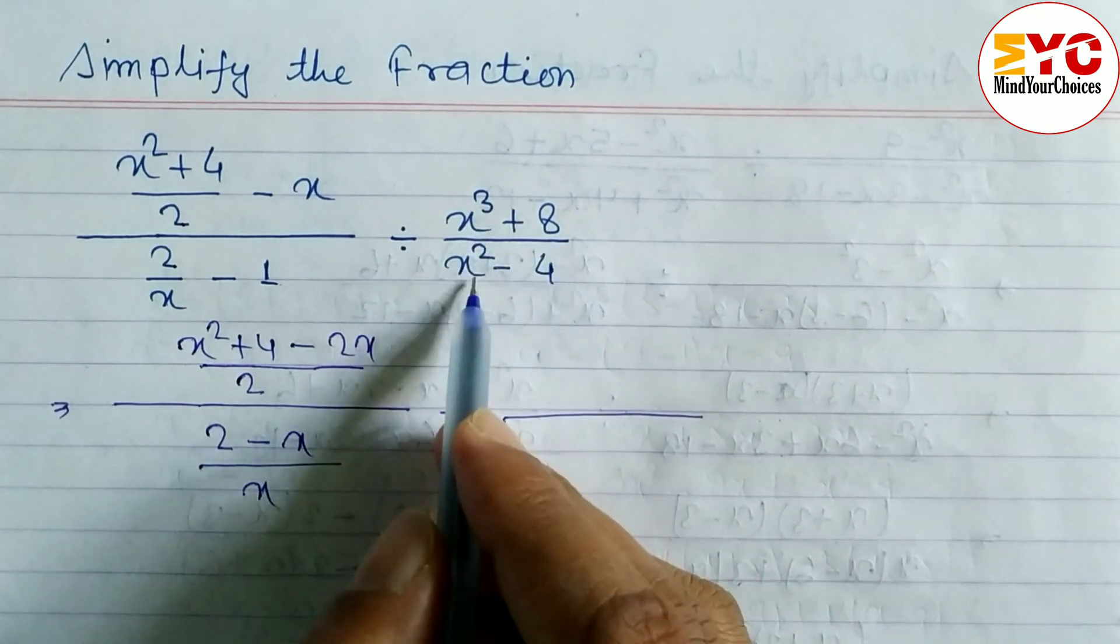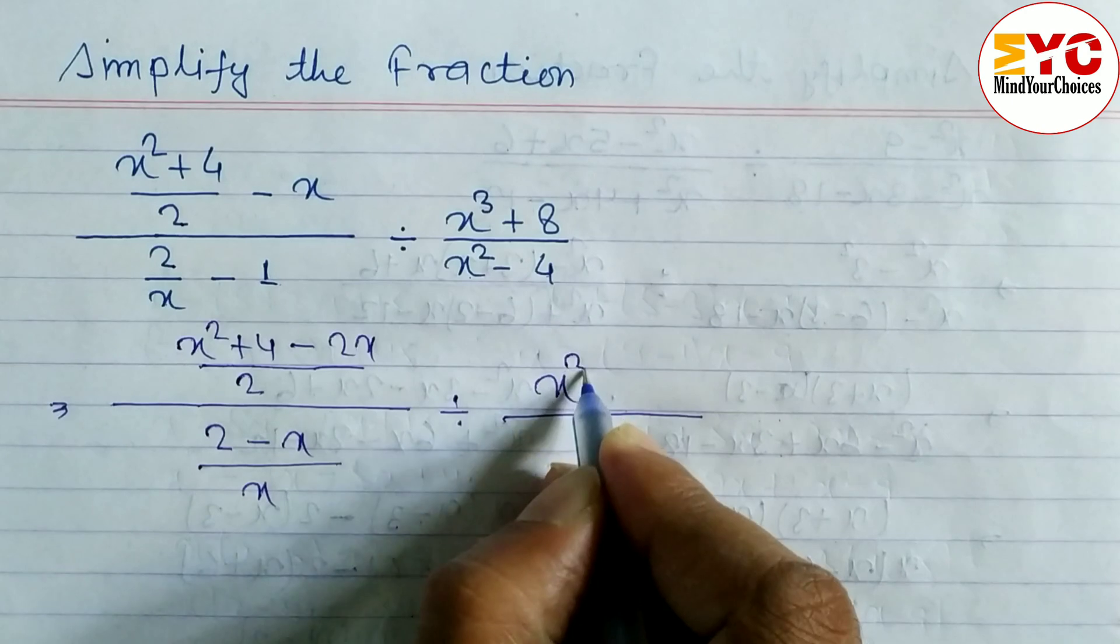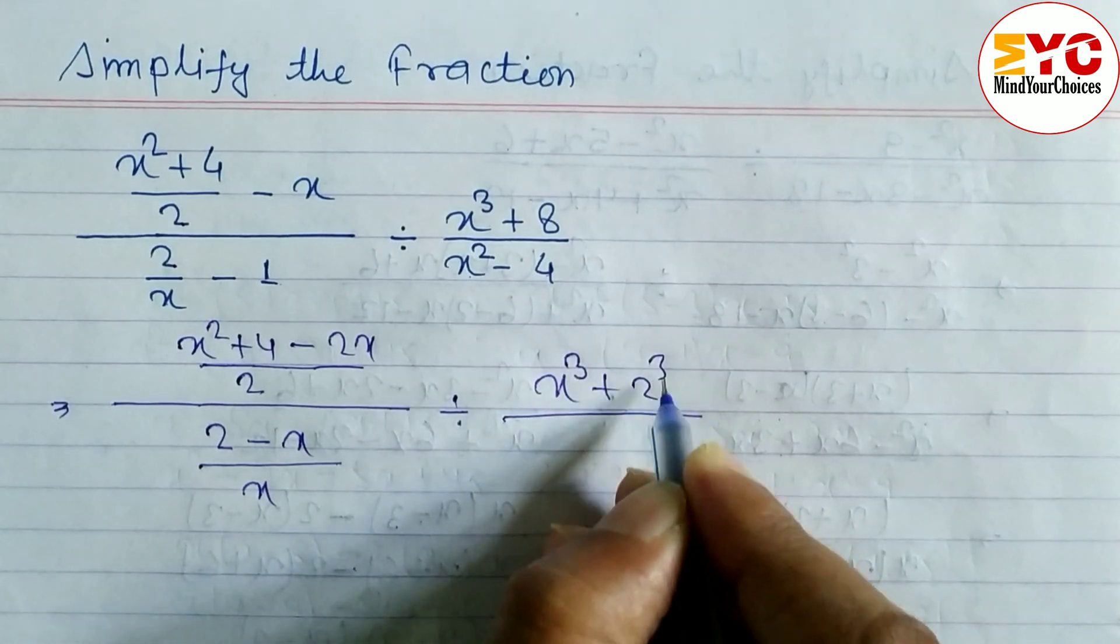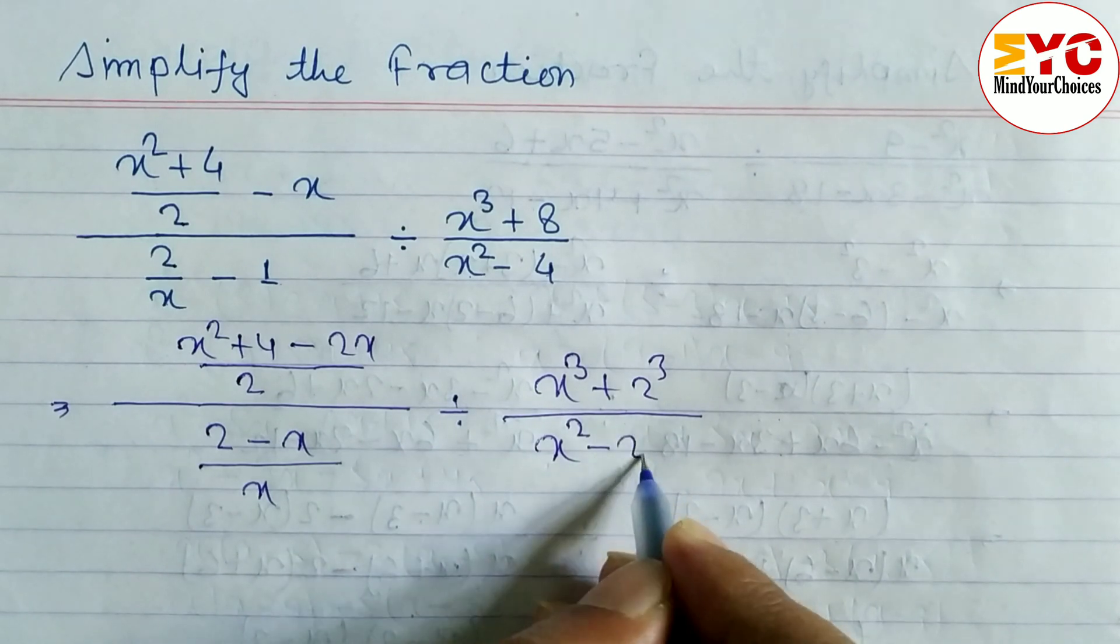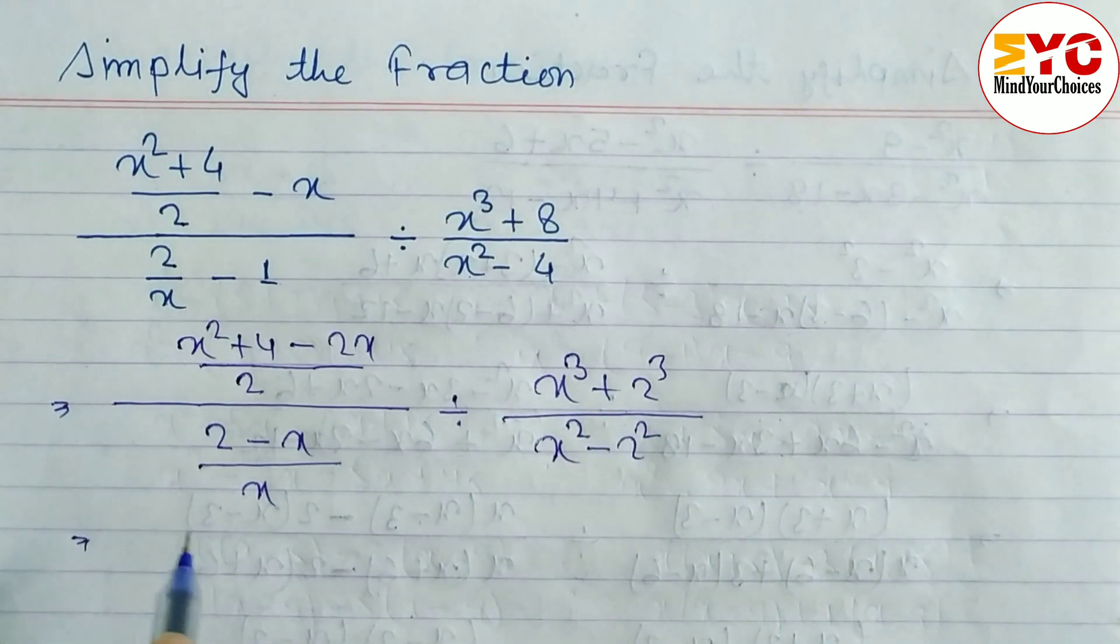So we can write here x³ + 2³, 2³ means 8, and in denominator we can write x² - 4, means we can write here 2². After this...